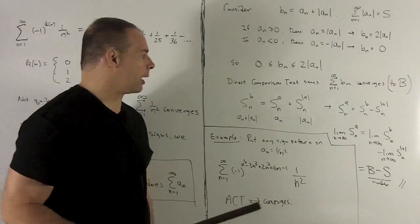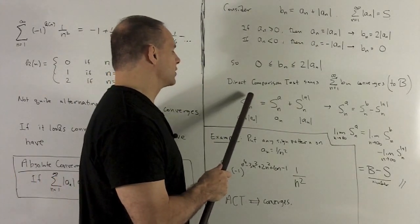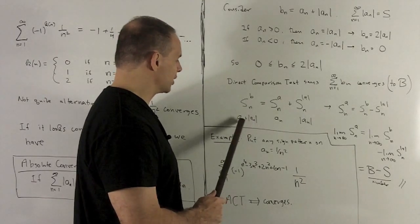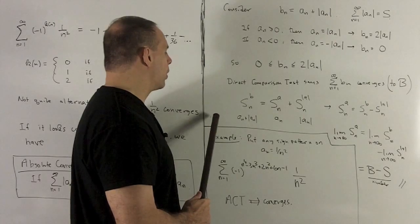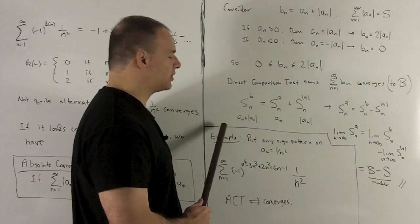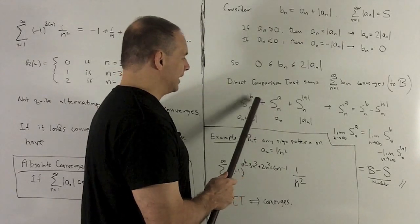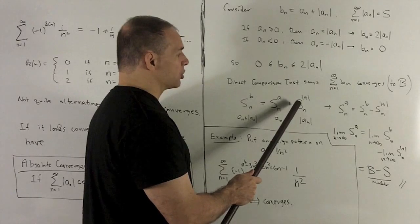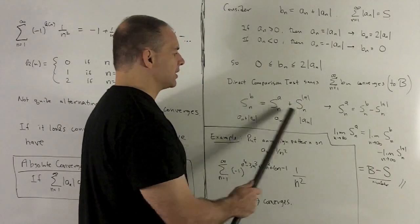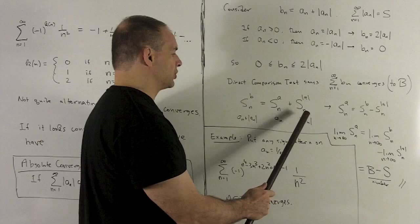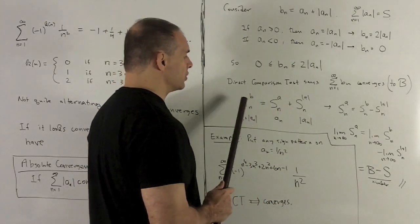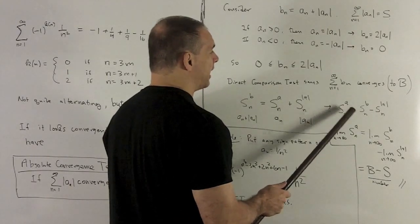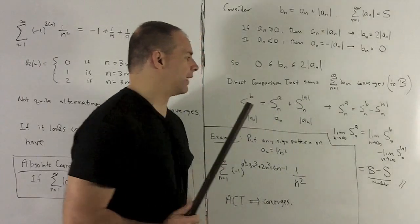So let's call the sum for this series b. Now I just want to pull things apart. I have the partial sum for the b series. Remember that's a n plus the absolute value. Take partial sums. We're just going to sum a1 plus absolute value a1 plus a2 plus absolute value a2, all the way up to this term, equal to partial sum for a nth partial sum for absolute value of a. So I'm just going to take the difference, moving one of these to the other side.